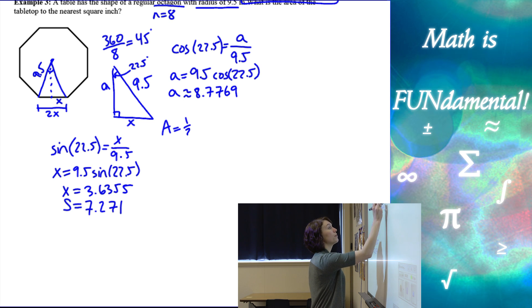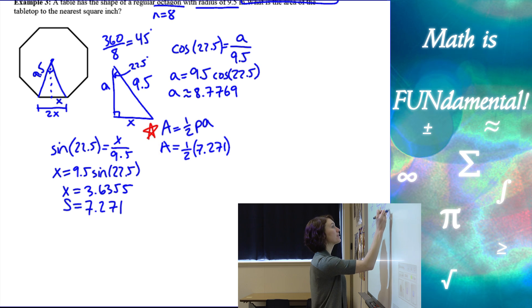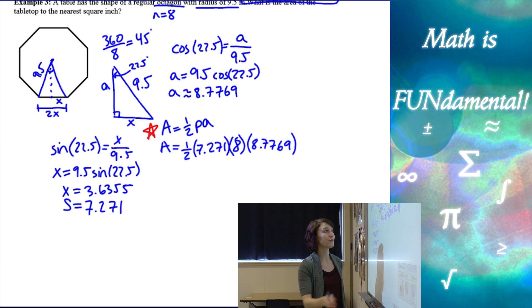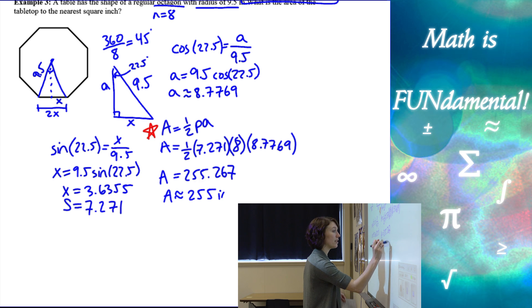Alright, so now we've used our trig, two sets of it, to find our side length in our apothem. Now we apply our formula, which is one-half the perimeter times the apothem. Remember, this is our magic area formula here. Alright, so that's going to be one-half. Perimeter is my side length, which is 7.271 times the number of sides. This was an octagon, so that's going to be 8. And then times the apothem, which was 8.7769. Because we rounded so many times for our side length and our apothem, we might end up with a little rounding error, which is why I try to play it safe. You use a lot of decimals when you round. Alright, and then we multiply all those things together, and we get 255.267. And then it tells us they want the area to the nearest square inch, so they want us to round to 255 inches squared.